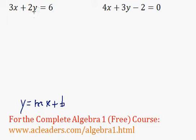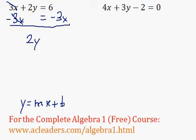That means we need to isolate y, so let's isolate y here. I'll start by taking 3x from both sides of the equation, so those go away, and we have 2y equals negative 3x plus 6.